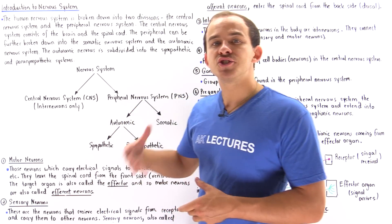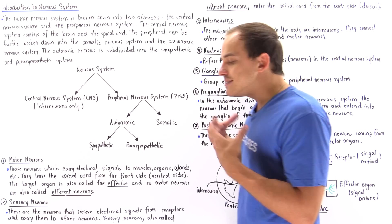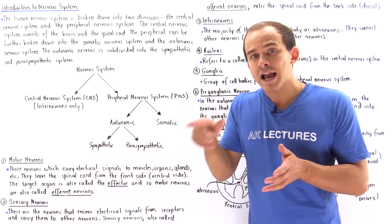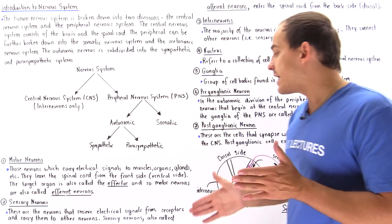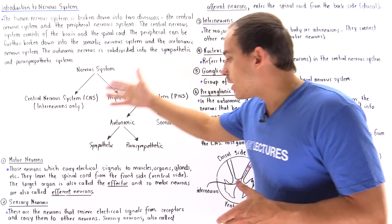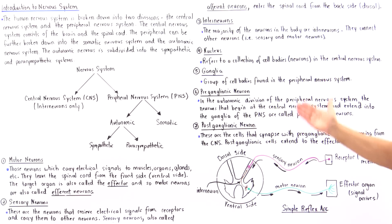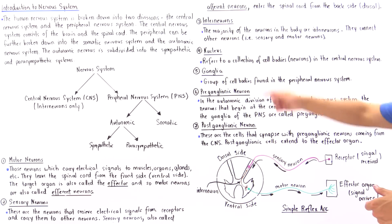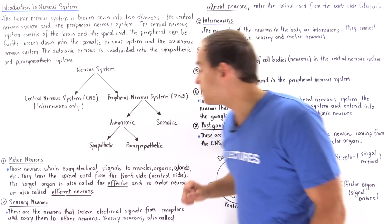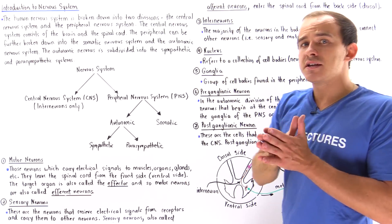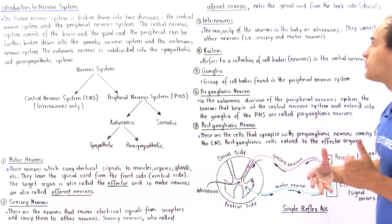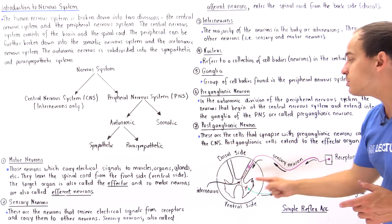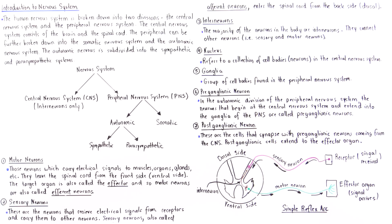A sensory neuron is a neuron that begins at some receptor, receives a signal from the environment, and then sends that signal into the central nervous system. Sensory neurons receive electrical signals from receptors and carry those to other neurons or to the central nervous system. Sensory neurons are also known as afferent neurons, and these types of neurons enter our spinal cord from the back side — the dorsal side.